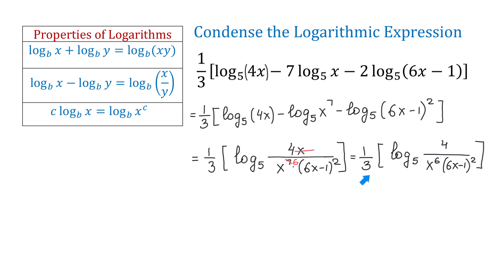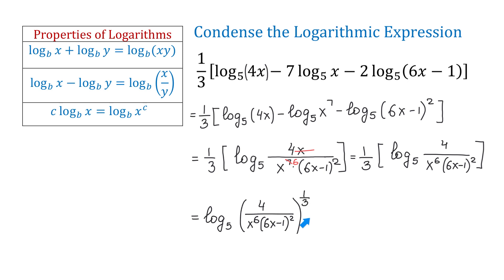We still have a fraction in front of the logarithm, and when condensing logarithms we need to write any coefficient as an exponent. Writing 1 over 3 as an exponent gives us log base 5 of the quantity 4 over x to the 6th power times 6x minus 1 to the 2nd power, all raised to the 1 over 3. Because this exponent is a fraction, we can rewrite the expression in radical form: log base 5 of the cube root of 4 over x to the 6th power times 6x minus 1 to the 2nd power. And here we have the condensed expression.